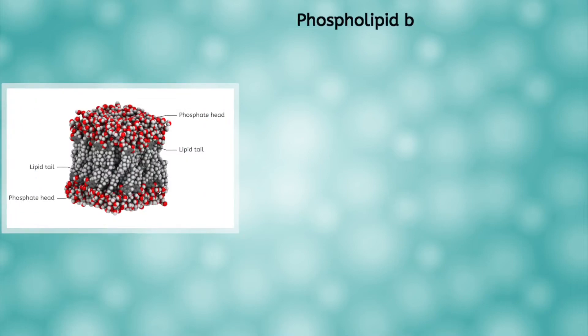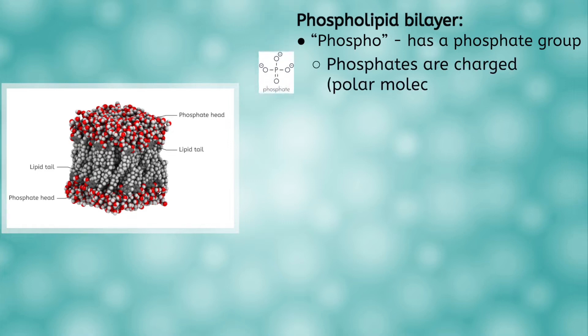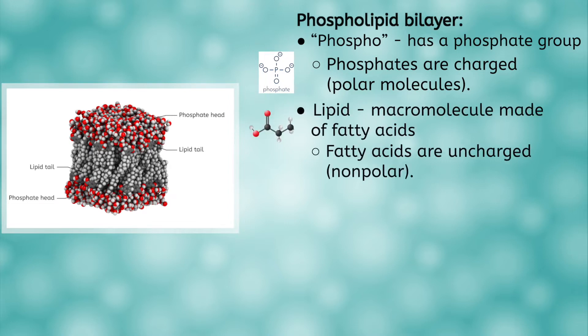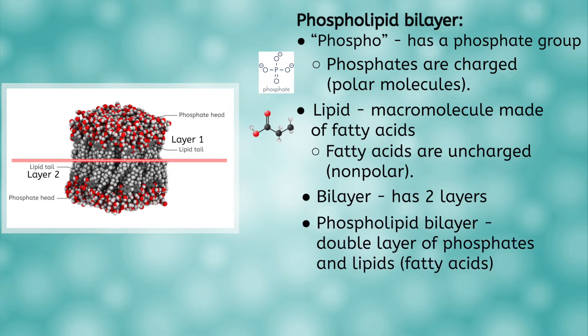The word begins with phospho, which means that it has a phosphate group. Phosphates are charged molecules that contain the element phosphorus. Remember that we called charged molecules polar. From the previous unit, you know that lipids are made of nonpolar fatty acids. And bilayer means that it has two layers. So a phospholipid bilayer is simply a double layer of phosphate lipids.